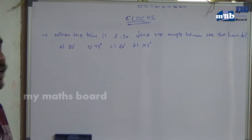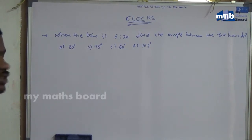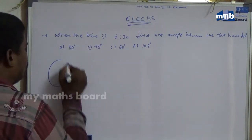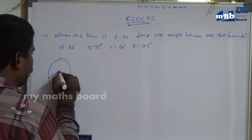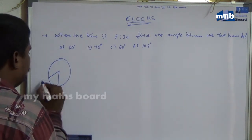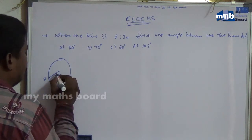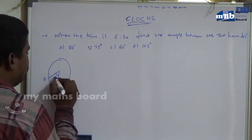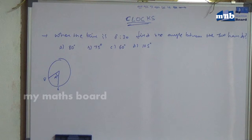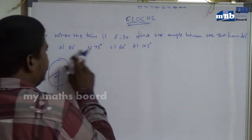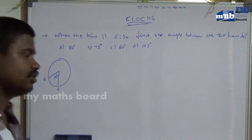When the time is 8:30, find the angle between the two hands. In a clock, when the time is 8:30, what is the angle between the two hands? The answer options are: 80 degrees, 75 degrees, 60 degrees, and 105 degrees.